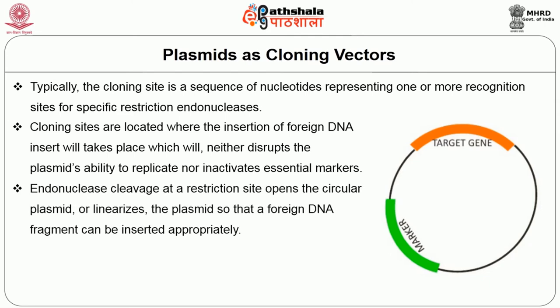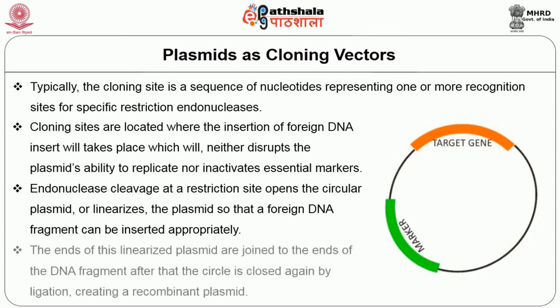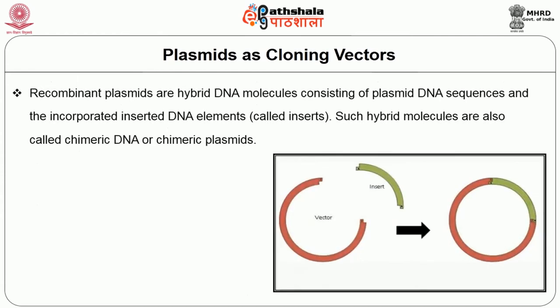Endonucleases cause cleavage at a restriction site, which opens a circular plasmid — linearizing it — so that a foreign DNA fragment can be inserted in an appropriate place. The ends of this linearized plasmid are joined to the ends of the DNA fragment, and the circle is closed again by a process called ligation, creating a circular recombinant plasmid. Recombinant plasmids consist of plasmid DNA sequence and the incorporated inserted DNA elements called inserts.